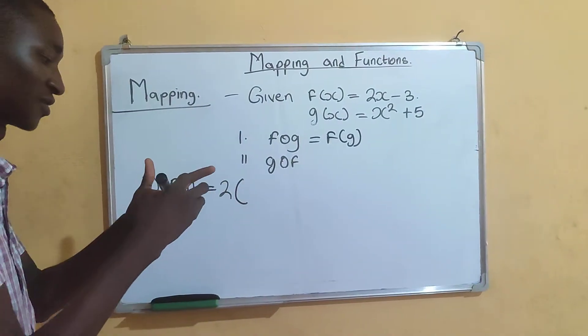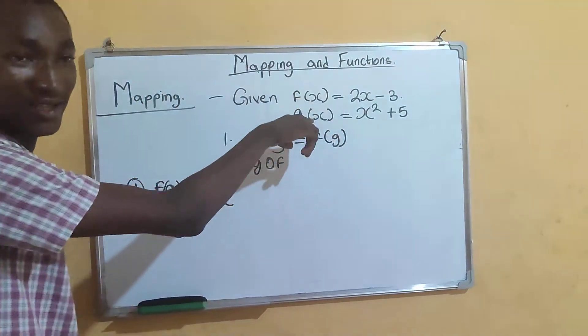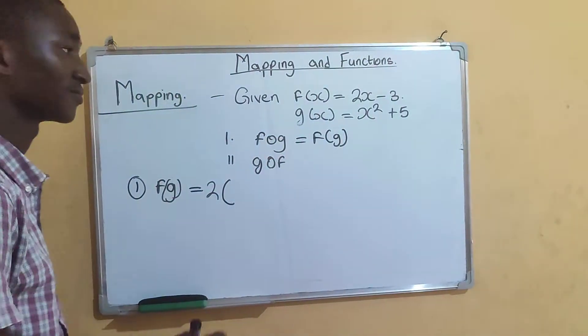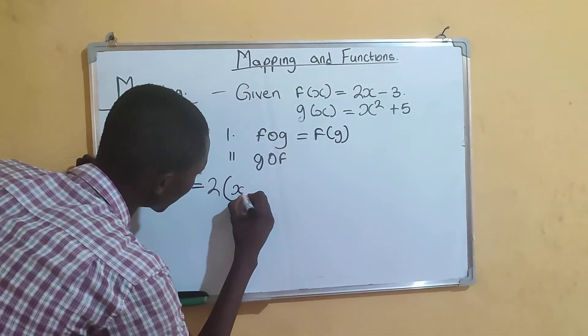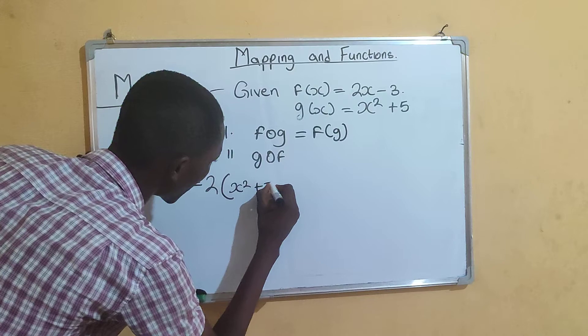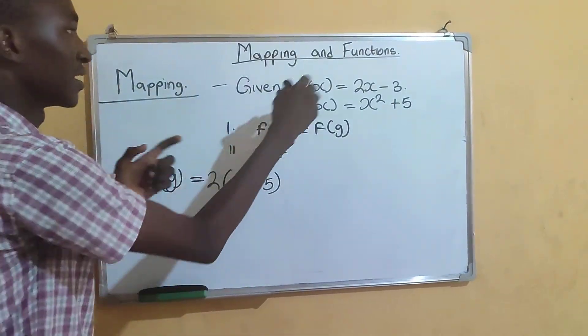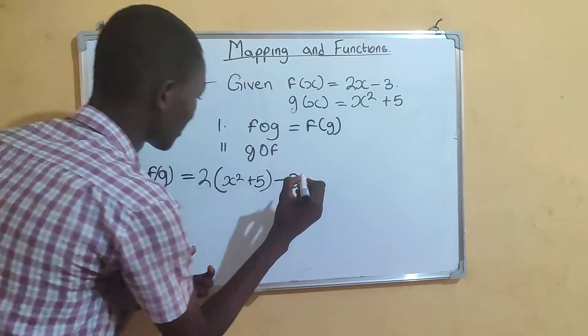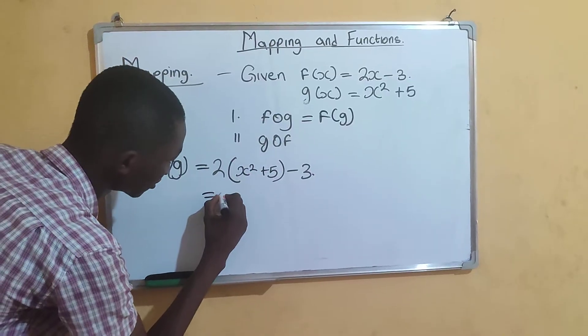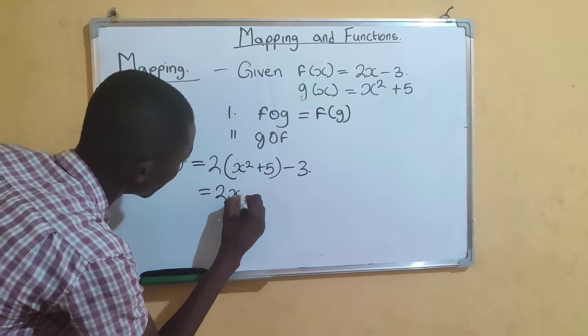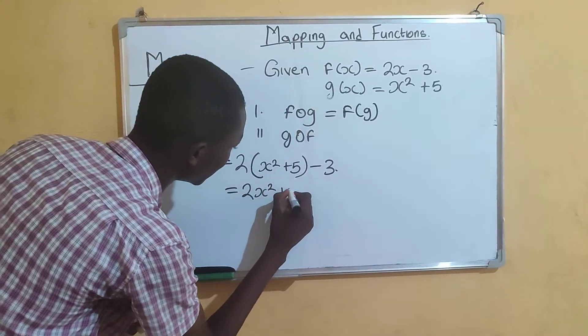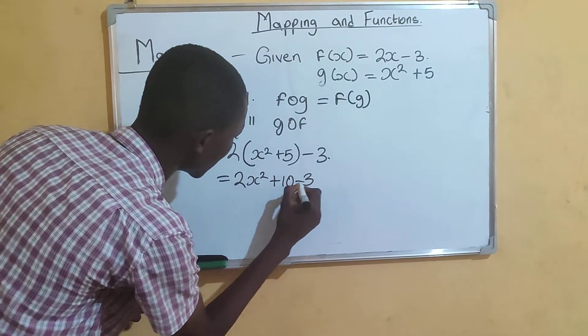So this is x squared plus 5, then minus 3. That's all. That's 2 times x squared plus 10 minus 3, which equals 2x squared plus 7. That's for the first question.